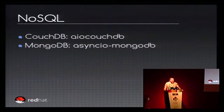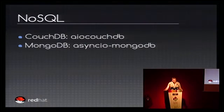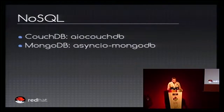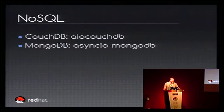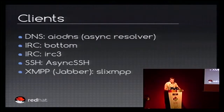For NoSQL, you also have clients. For CouchDB, you have aiocouchdb. For MongoDB, you have asyncio-mongodb. So basically, you have everything to access all kinds of databases, which is much better than the state one year ago when you had nothing to build an application.